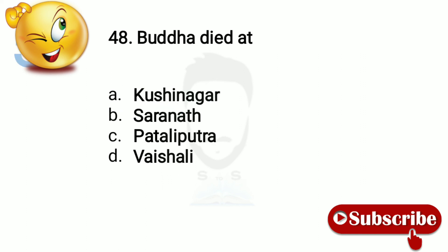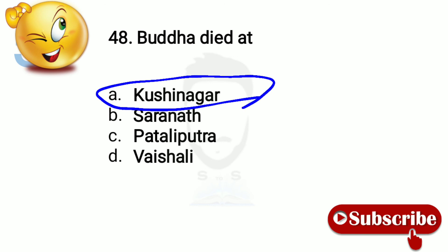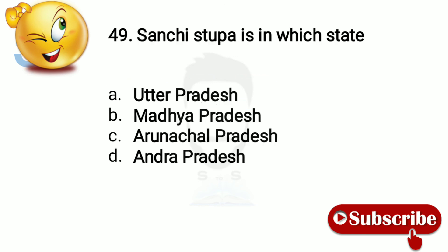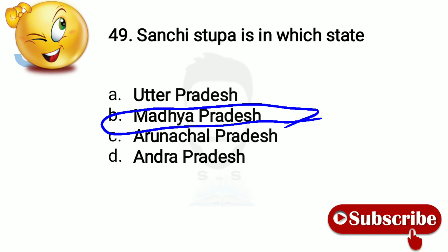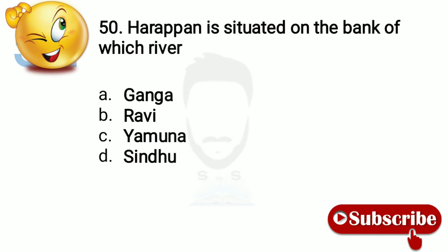Question 47: Buddha died at Kushinagar. Question 48: Sanchi Stupa is in which state? Option number B, Madhya Pradesh. Question 49: Harappa is situated on the bank of which river? Option number B, Ravi.